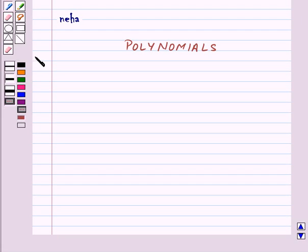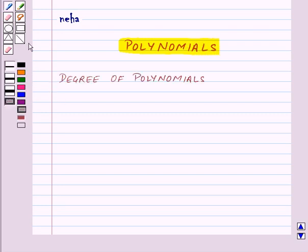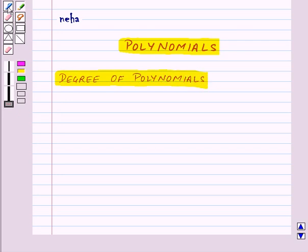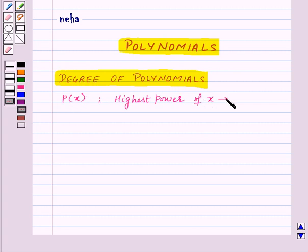Hi and welcome to the session. Today we will learn about polynomials. Let us start with the degree of polynomials. If P of X is a polynomial in X, then the highest power of X in the polynomial P of X is the degree of P of X.